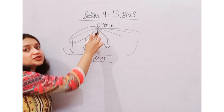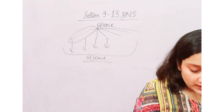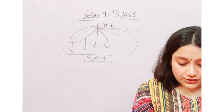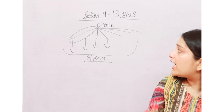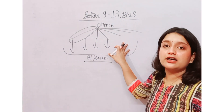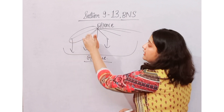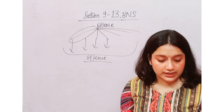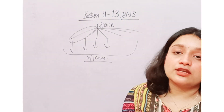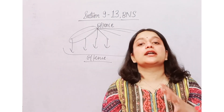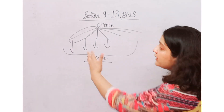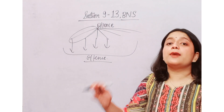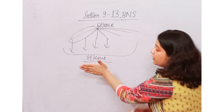Each part comes to an offense. The offender shall not be punished with the imprisonment for more than one of such offenses — he will not be punished for each part separately. Unless it is expressly provided in any section, you will not punish for different parts; you will punish for the offense as a whole.